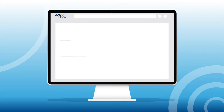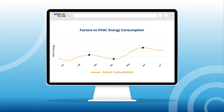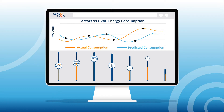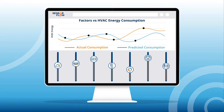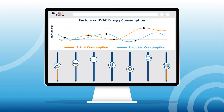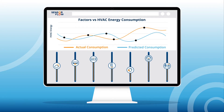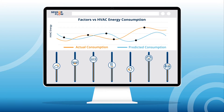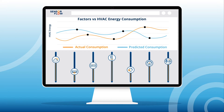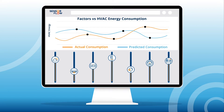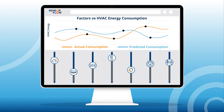No two hotels are the same, so one size does not fit all. Each factor impacts a hotel differently, hence the weighting of each factor is important to correctly identify the impact it has on the HVAC energy consumption. Our prediction model cycles through the different weighting scenarios to generate the most accurate model to fit each individual hotel.